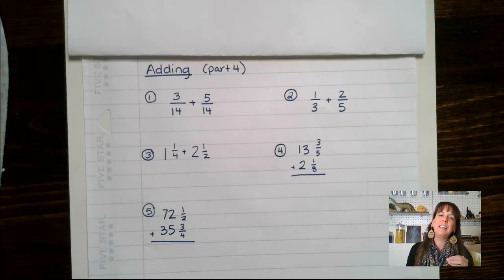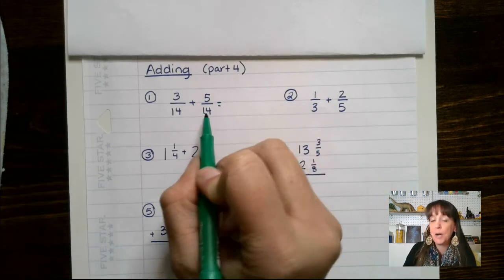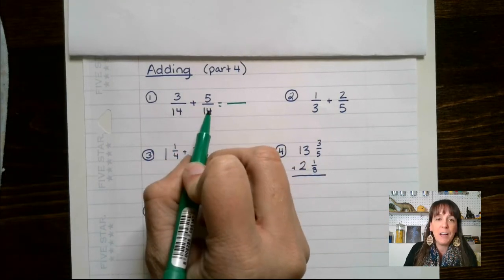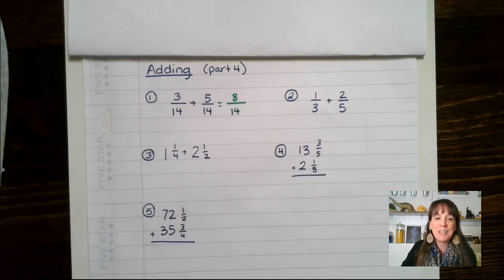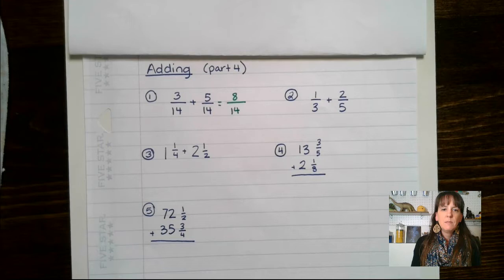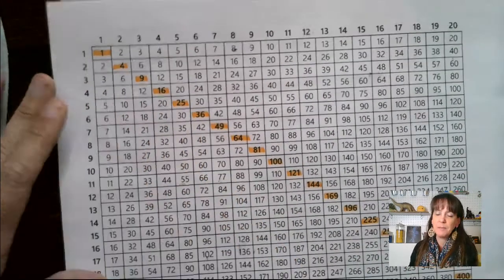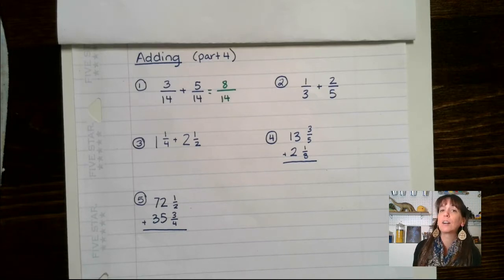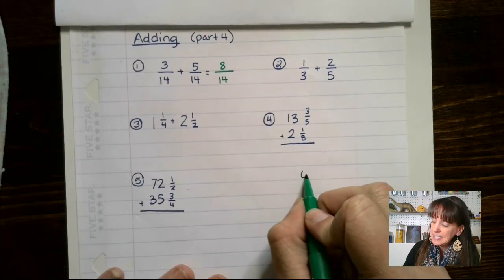Let's do a quick refresh on adding fractions. When we are adding fractions, we need our denominators to be the same — it's called a common denominator. Here we have 3/14 plus 5/14, and we end up with 8/14. But what happens when we don't have a common denominator? We have denominators of 3 and 5. We look at multiples of 3 and multiples of 5 and find that 15 is in common, because 3 times 5 is 15.